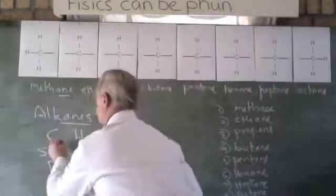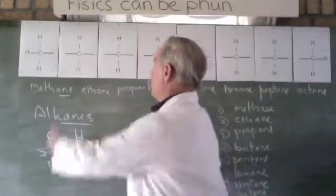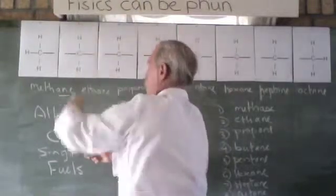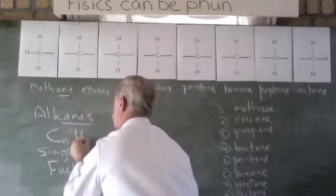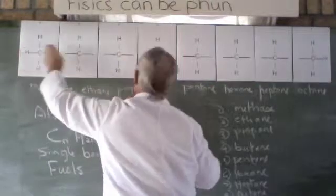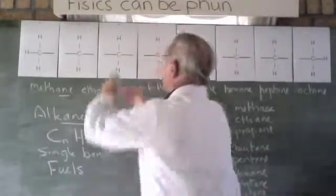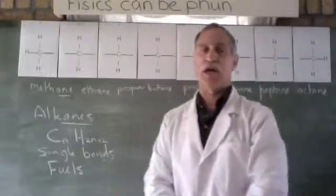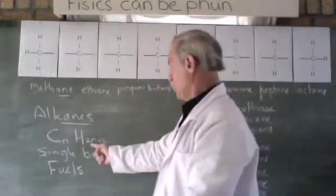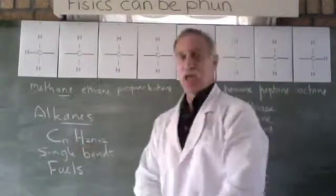So the general formula would be Cn, where n is any number, H, there's two for every carbon, there's two hydrogens, CnH2n, and then there's two extra, plus two. So each carbon's got two hydrogens, and then the end ones have each got another hydrogen, hence 2n plus two for the end ones. So that would be the general formula.